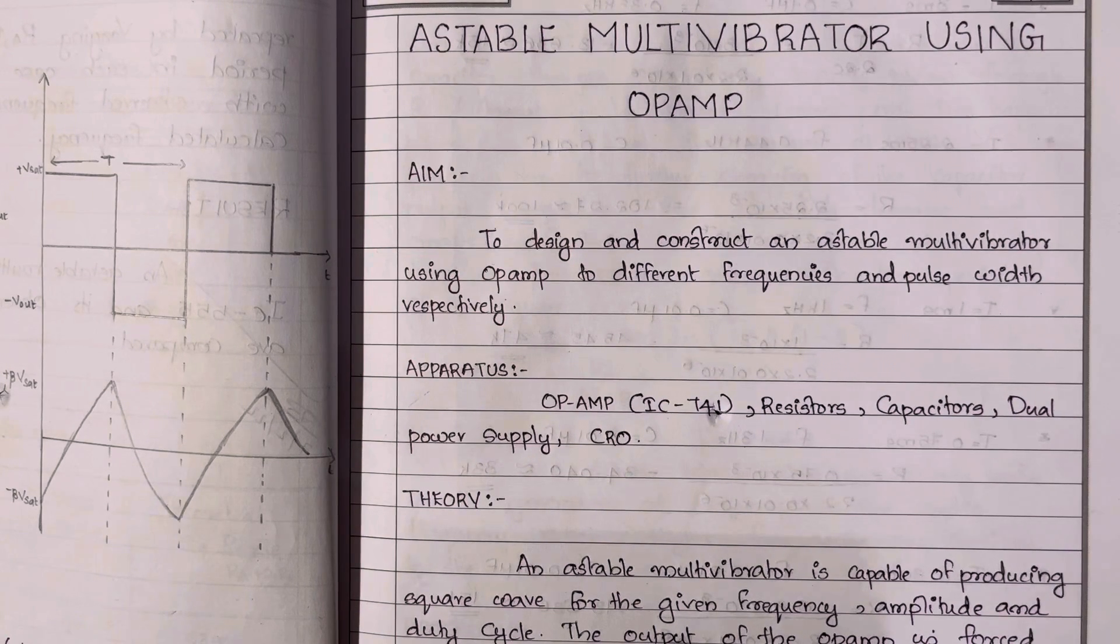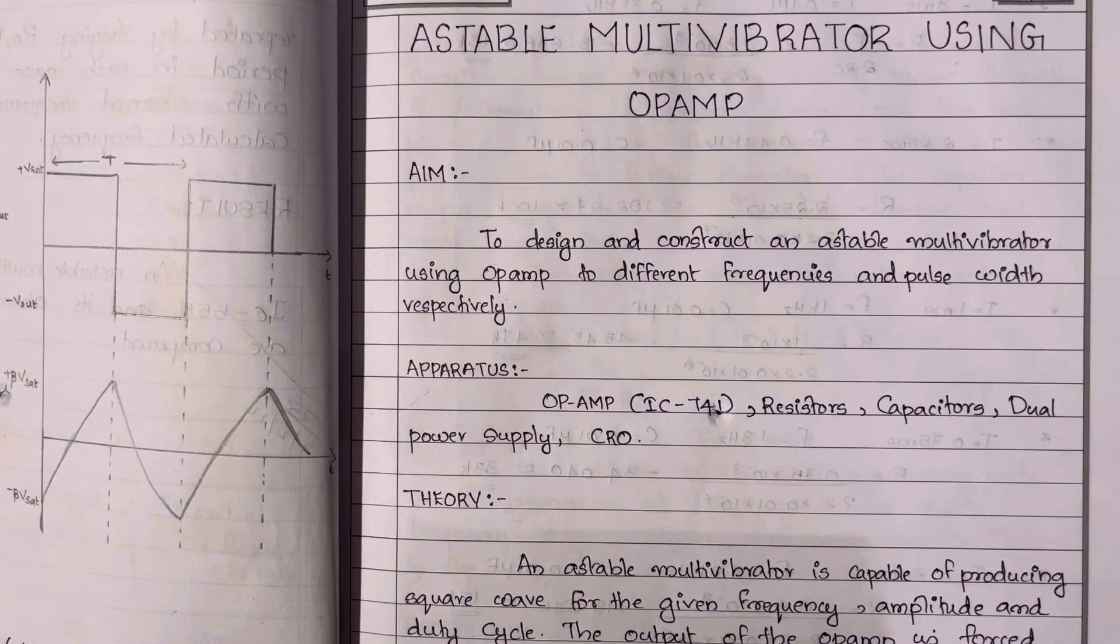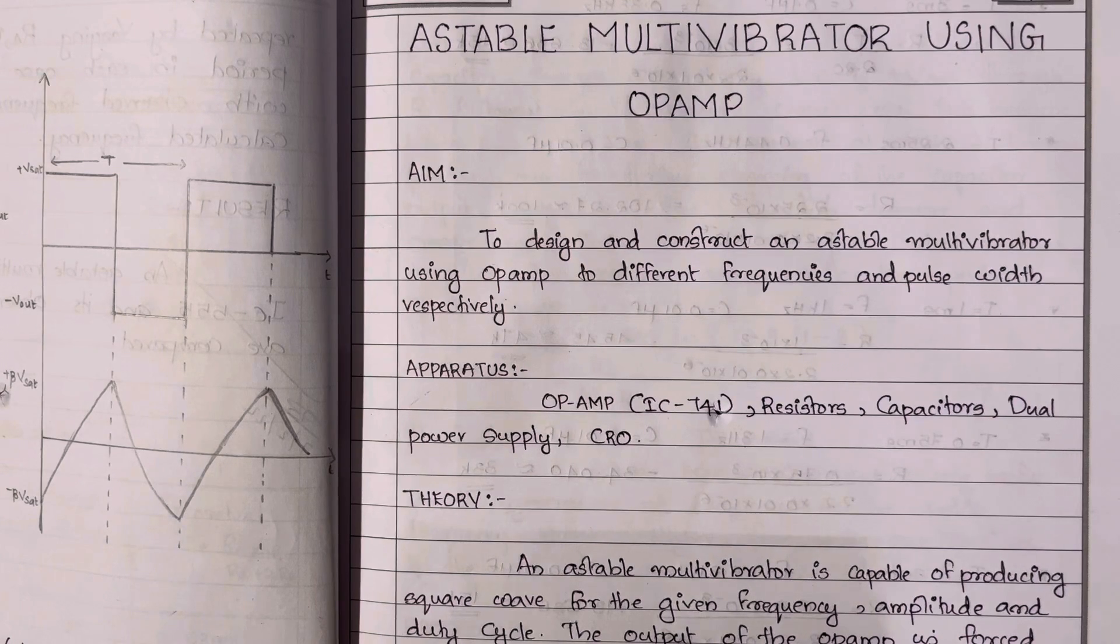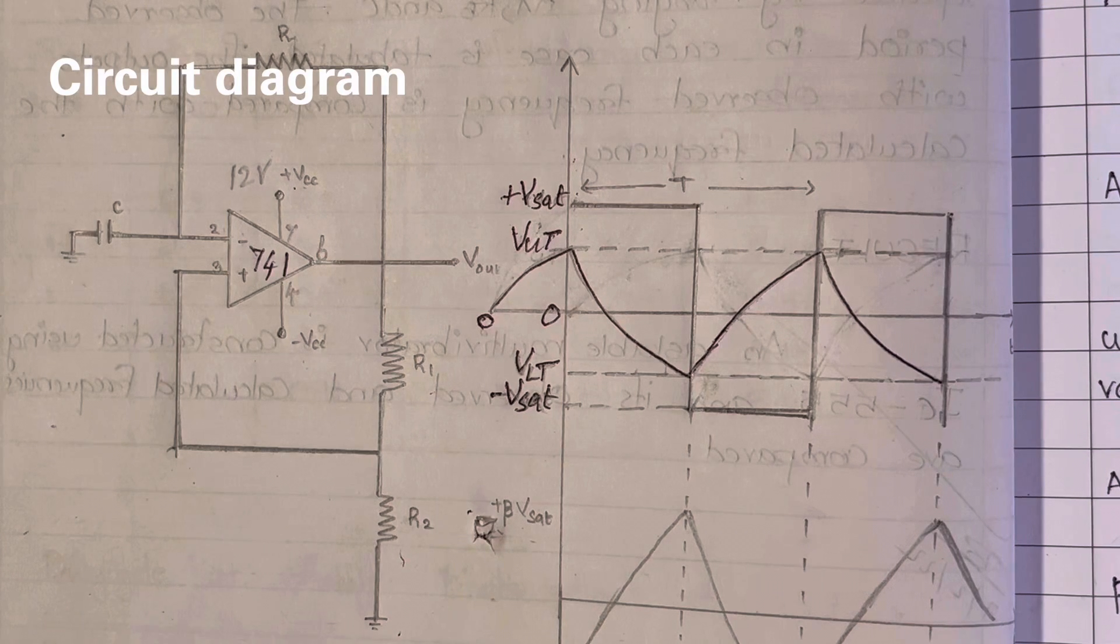First let's discuss the simple circuit and while discussing the circuit operation we will go through a little bit of its theory behind. This is the very simple circuit of an op-amp based astable multivibrator.